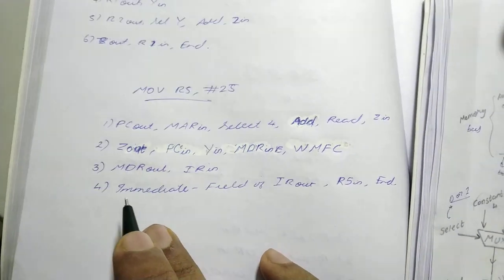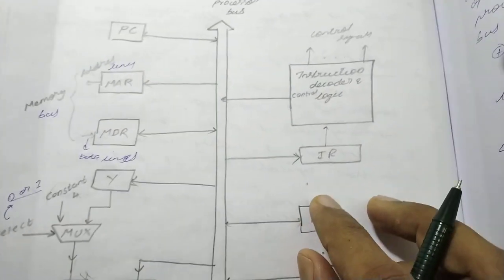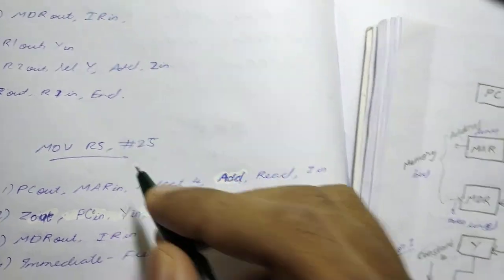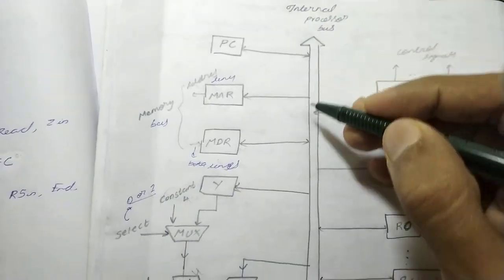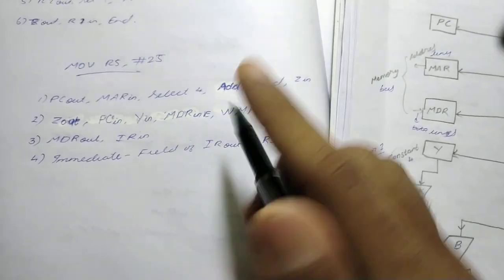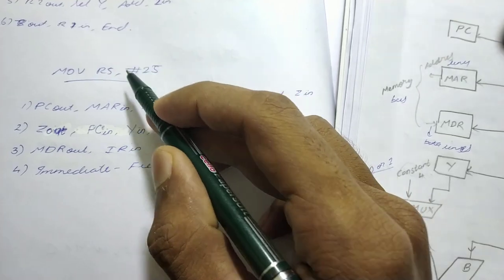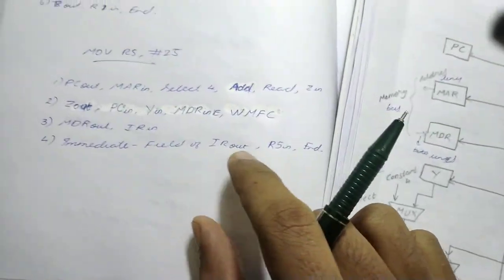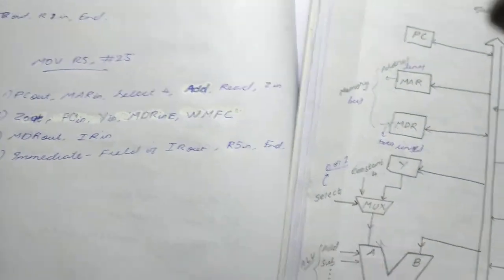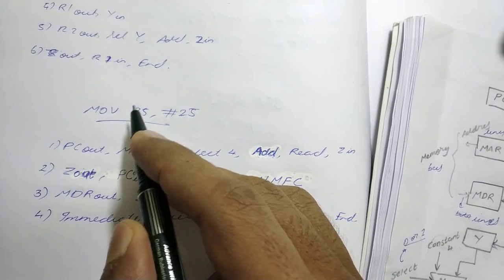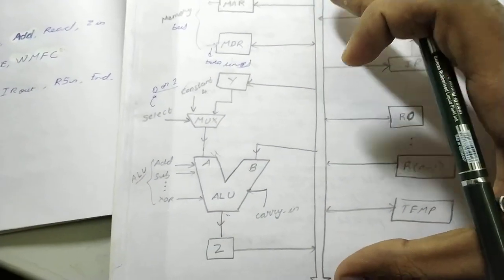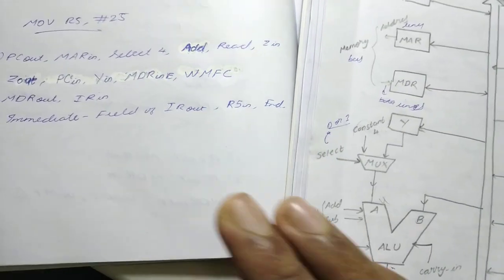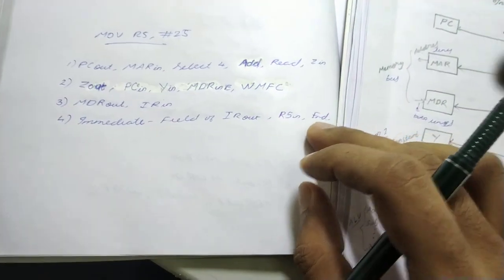To execute MOV R5, #25, we take the immediate field of IR out. The immediate field here is the number 25, so 25 is now on the internal processor bus. Immediate field of IR out means the immediate value — hashtag 25 — is available on the internal processor bus. We then do R5 in, taking that 25 into R5. R5 now has the value 25, and we end the instruction with End.